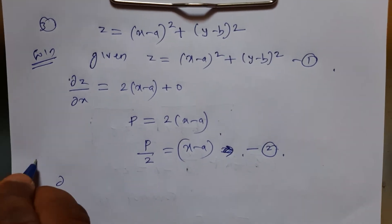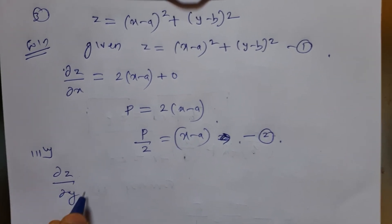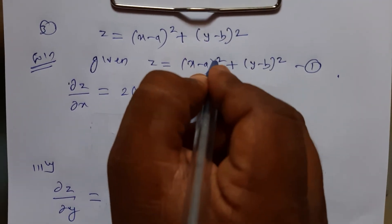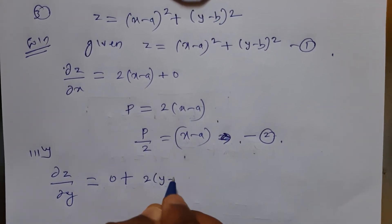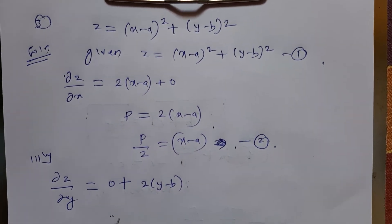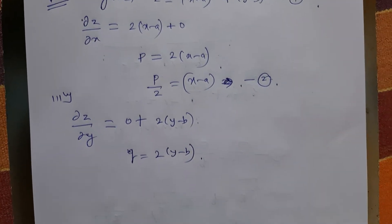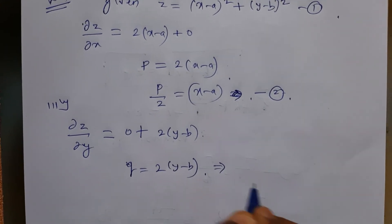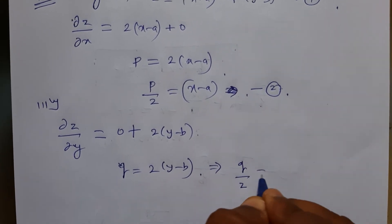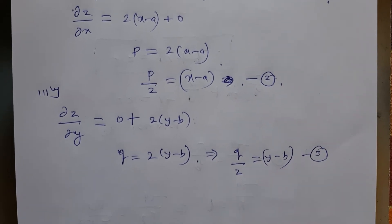Differentiating equation 1 partially with respect to y: the derivative of the first term is 0, and the derivative of (y - b)² is 2(y - b)·1. So dou z/dou y = q = 2(y - b). Therefore q/2 = y - b. I denote this as equation number 3.